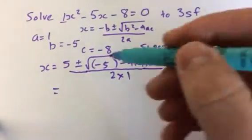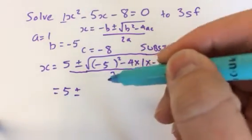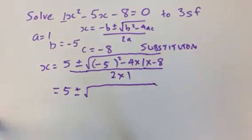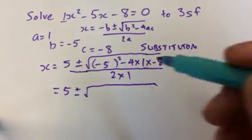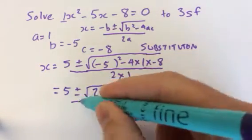And now if we simplify that a bit more, what's under the bracket? What's under the square root sign now? It would be 25 plus 32.